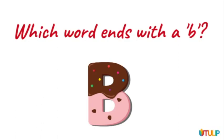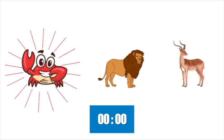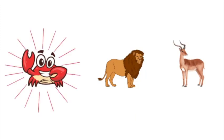Which word ends with a buh? Buh. Crab. Crab. Makorokoto.